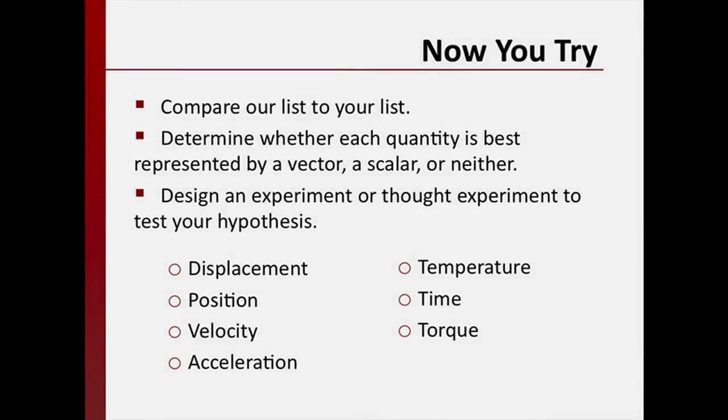During this video you came up with several physical quantities that you theorized behave like vectors. Consider the following list of quantities. Compare our list to your own list and determine whether each one is best represented by a vector, a scalar, or neither. You may need to design an experiment or a thought experiment in order to verify your hypothesis.